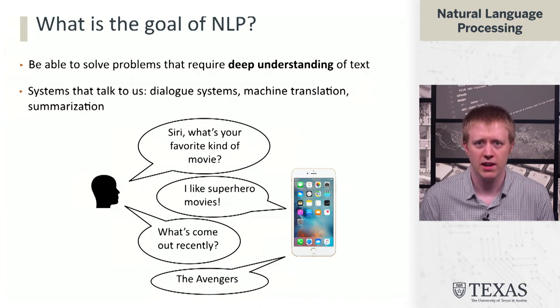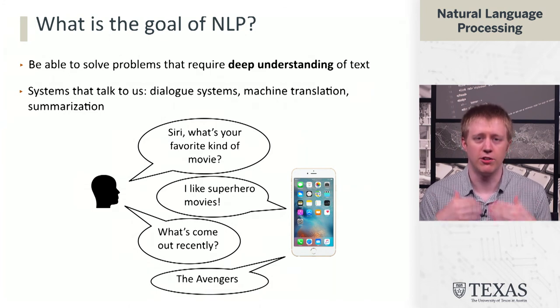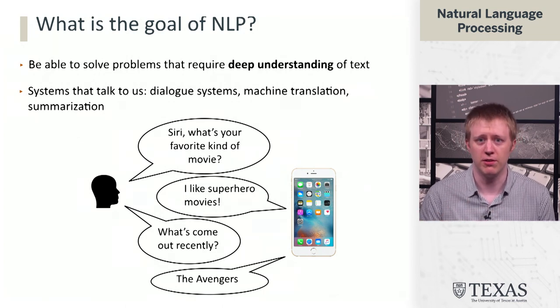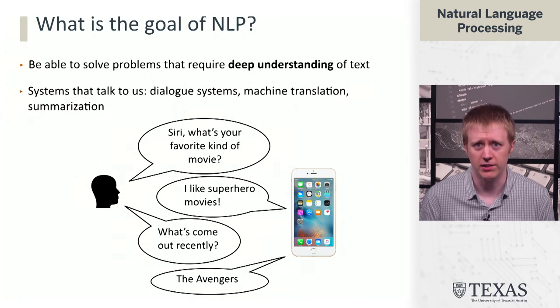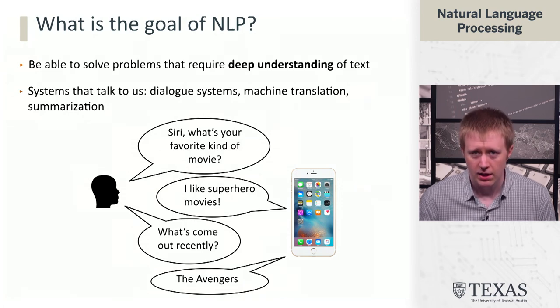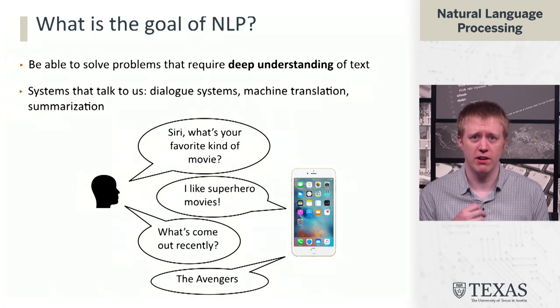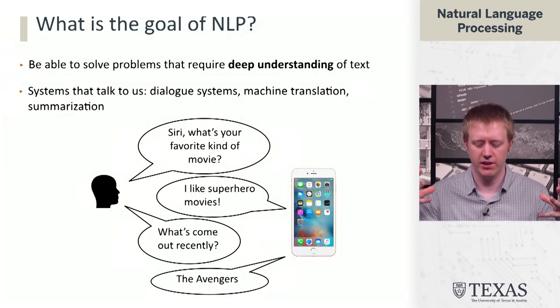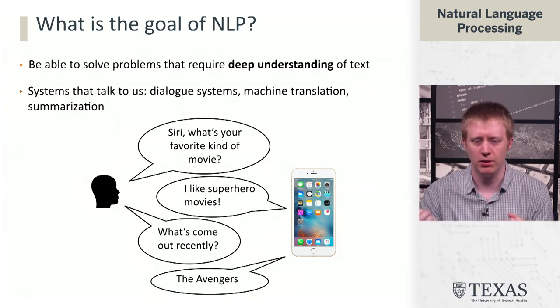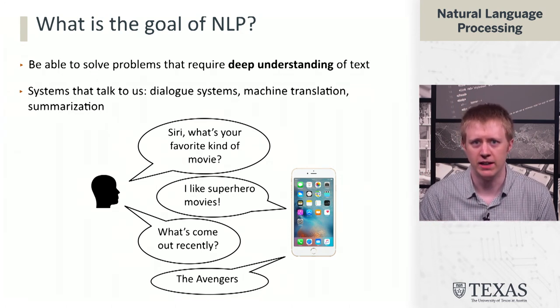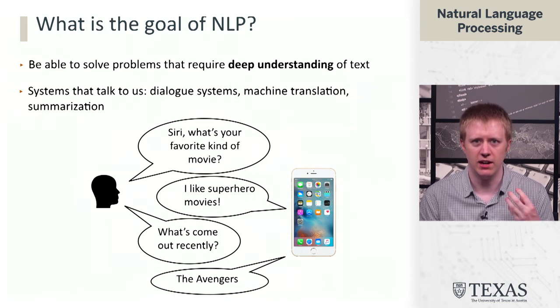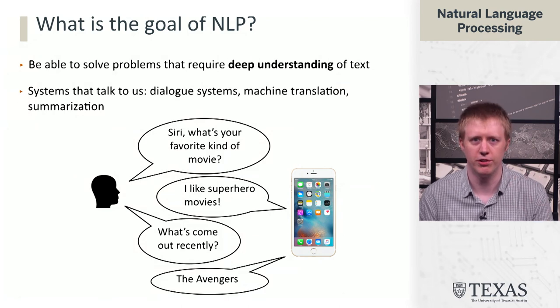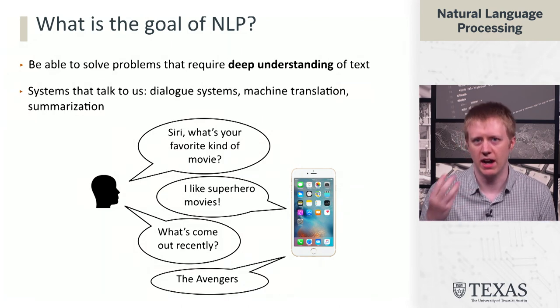In order to do this, the system needs to be able to understand what we're saying, respond appropriately, and in some cases be able to retrieve information, like a list of movies that have come out recently. Why does this require deep understanding? You're never going to be able to write down a whole big set of rules that encapsulate all the possible flows the dialogue might take. The system needs some way of recognizing what we're saying beyond just rules or templates, and then knowing how to respond to it.